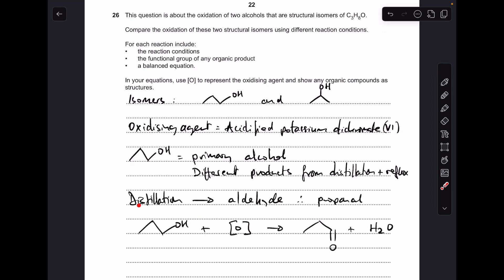All we need to say really is that distillation produces the aldehyde and in the case of propane-1-ol it's going to make propanal. And there's the equation. Remember we were told to use the [O] in square brackets symbol for the oxidizing agent and I'm showing clearly the structure of the organic product there.